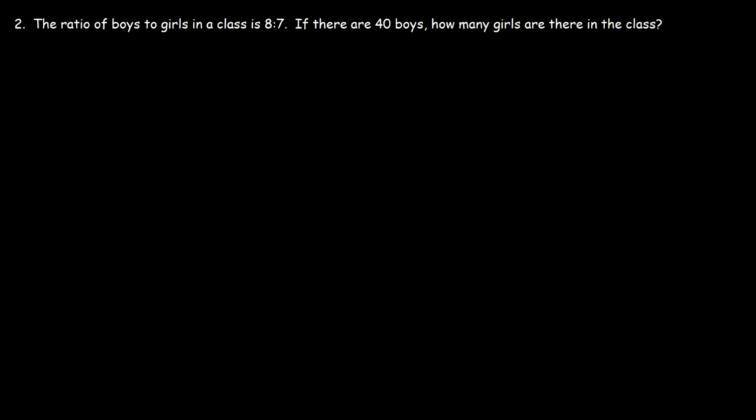Now let's move on to number 2. The ratio of boys to girls in the class is 8 to 7. If there are 40 boys, how many girls are there in the class? So what we're going to do is we're going to put the information relating to the boys on the left side and the information relating to the girls on the right side. We need to set up a proportion. We need to write two fractions separated by an equal sign.